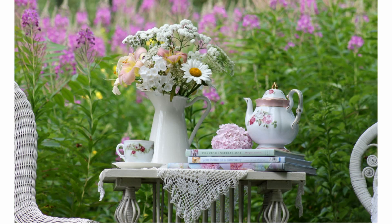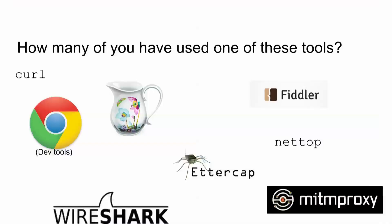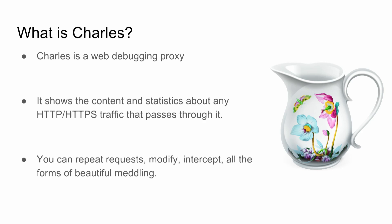Also it's a little play because the logo of Charles is a pretty fancy jug. Who here has used one of these tools? Okay, so we've all had a problem related to the web. Charles is a web debugging proxy, which means it's a proxy that runs on your computer, you can pass traffic through it, it'll show you what the traffic is, and you can also mess with it.